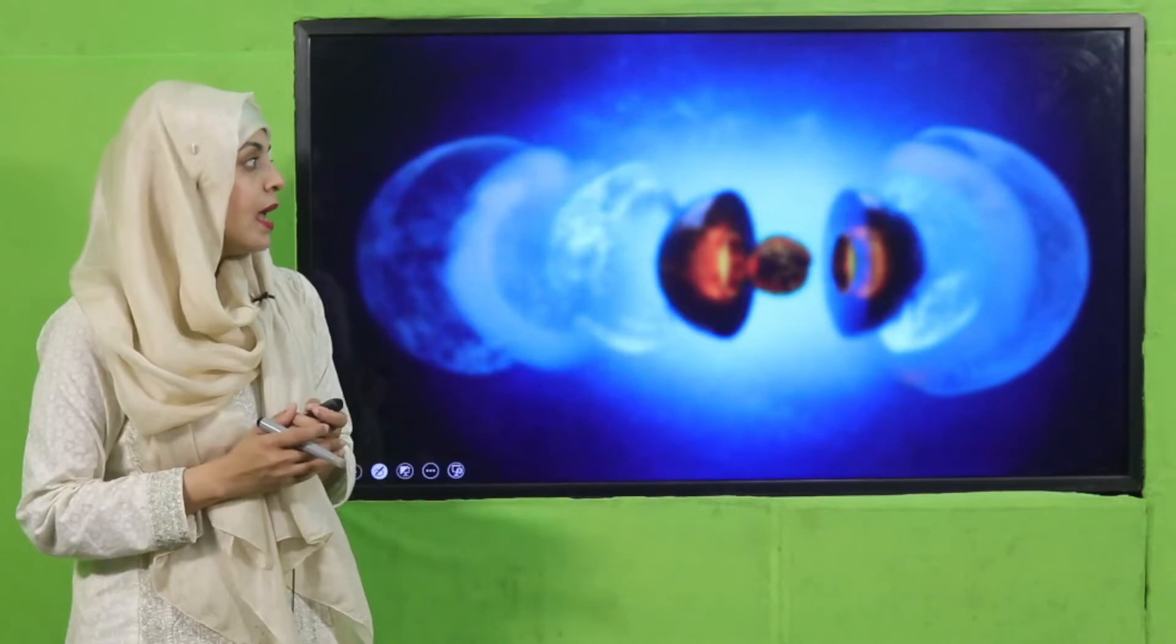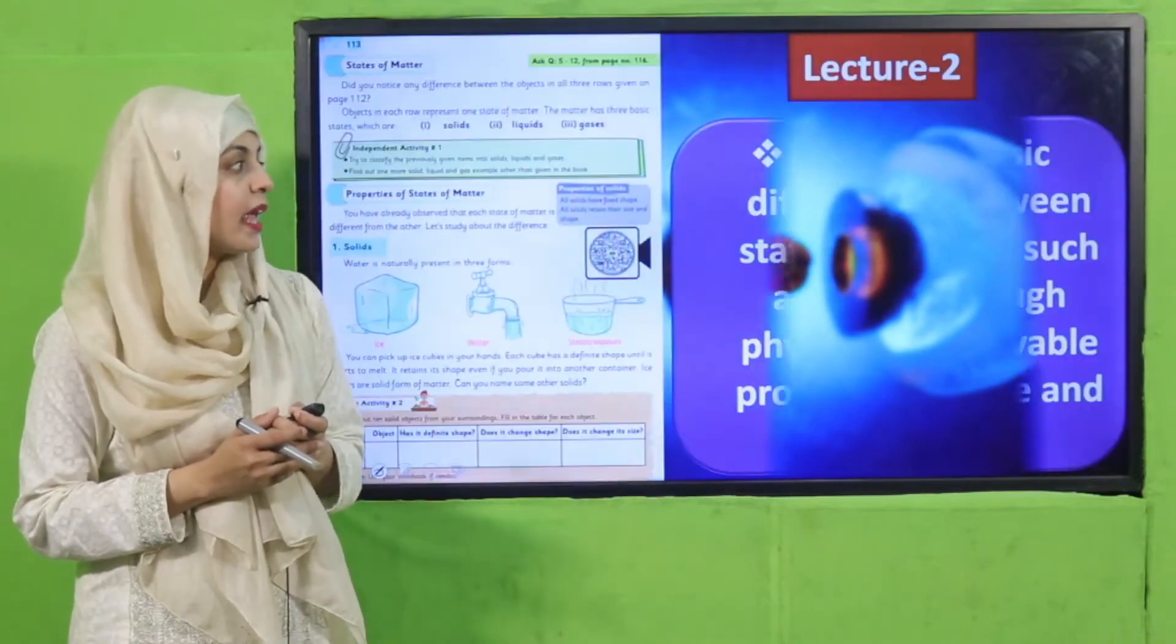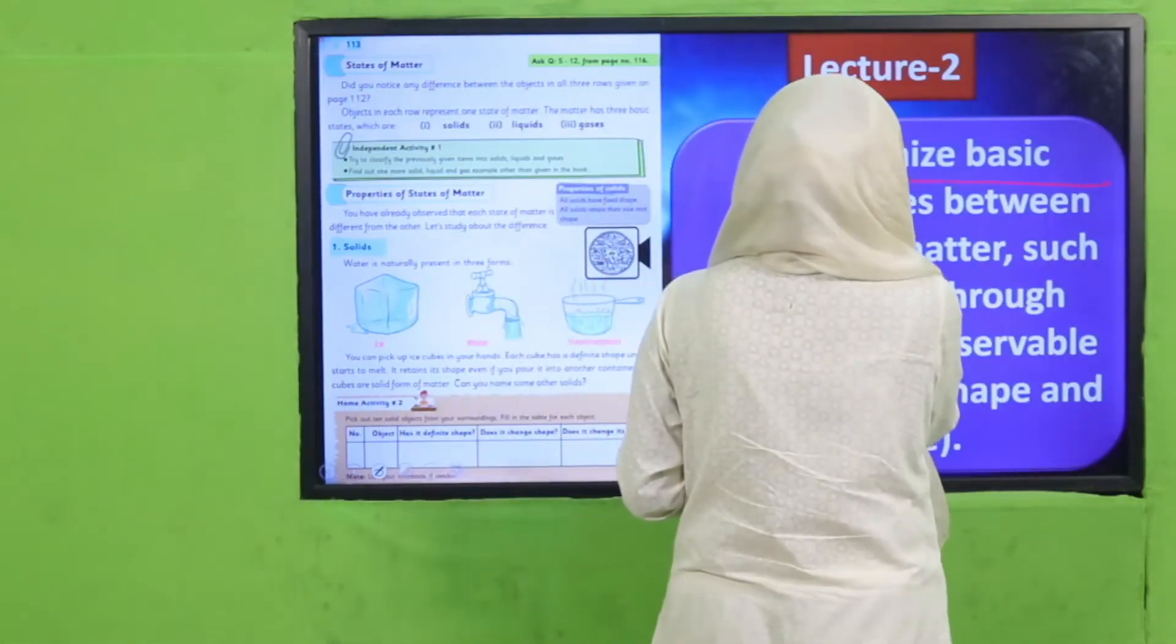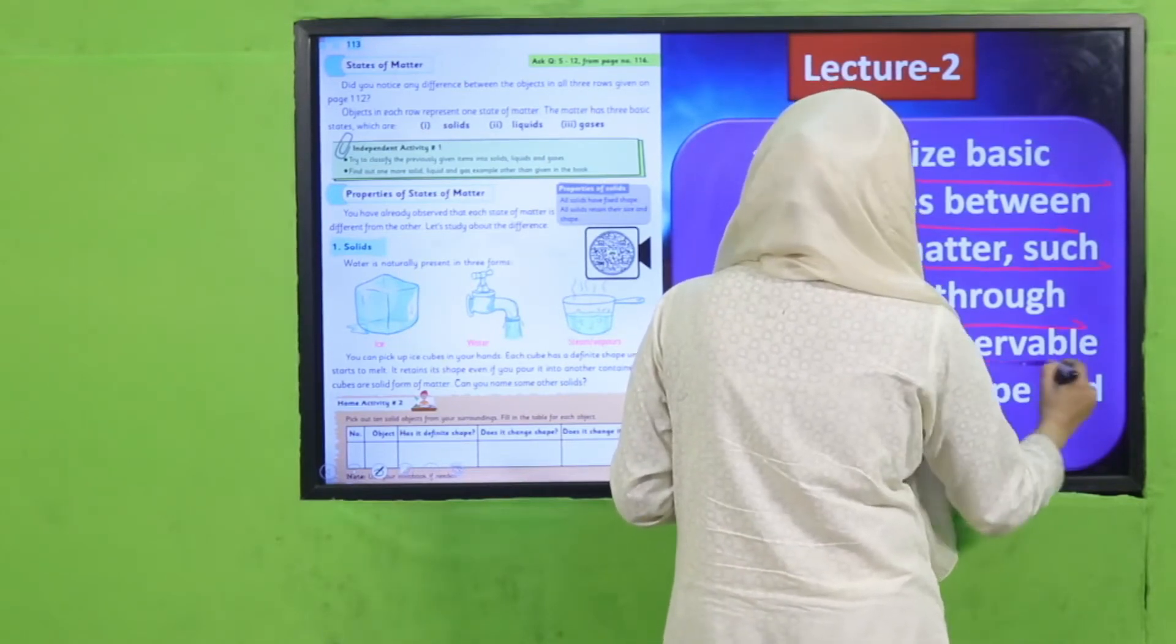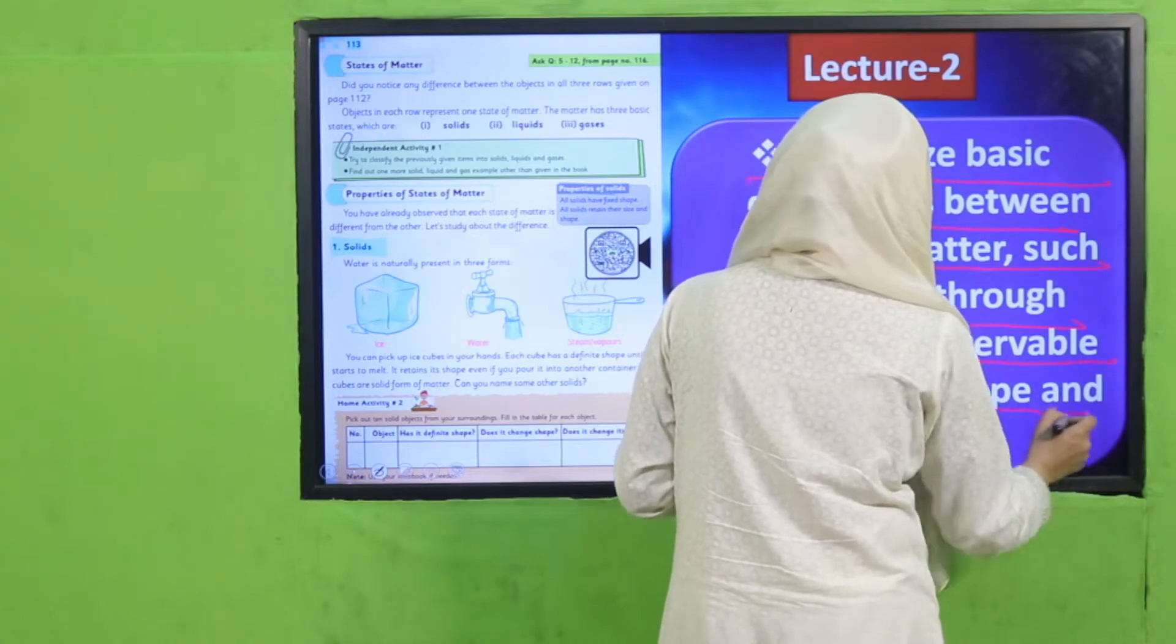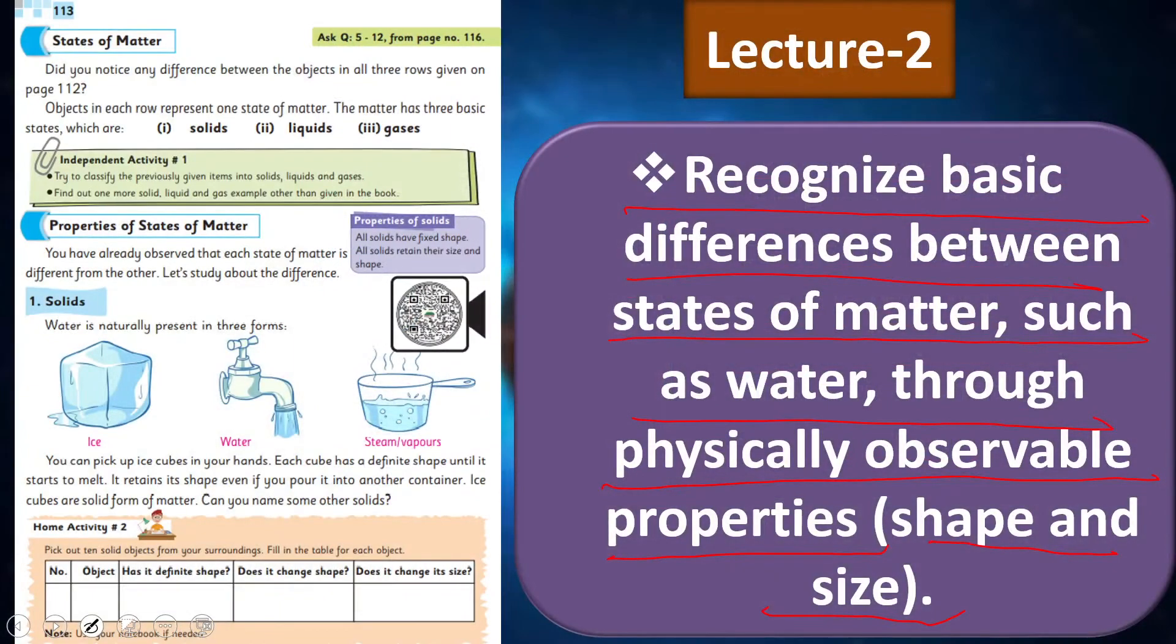In Lecture number 2, the students will be able to recognize basic differences between states of matter, such as water, through physically observable properties - shape and size.